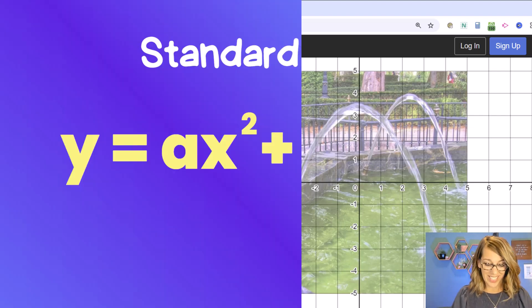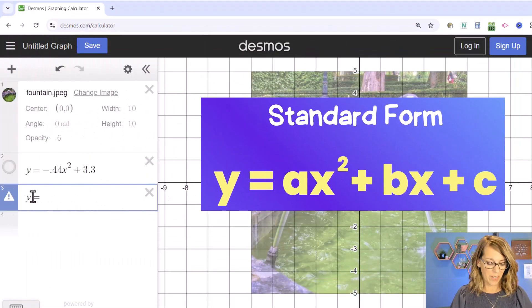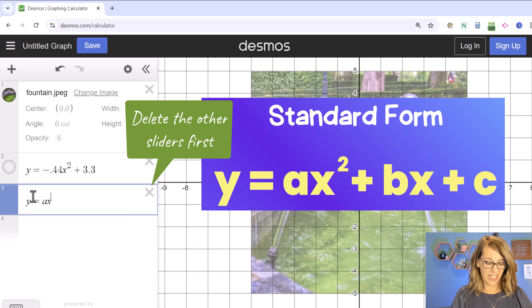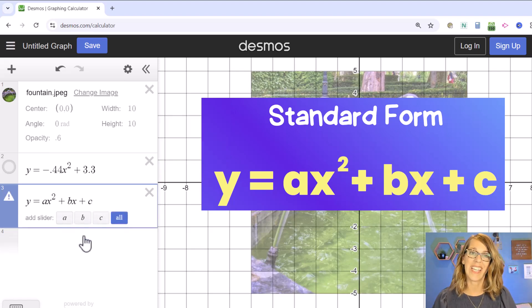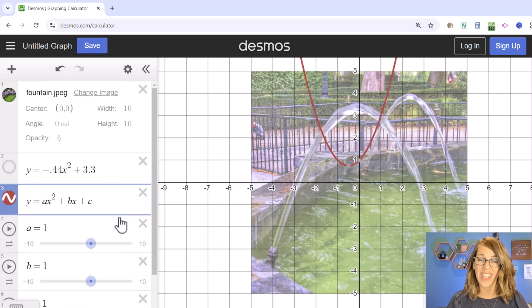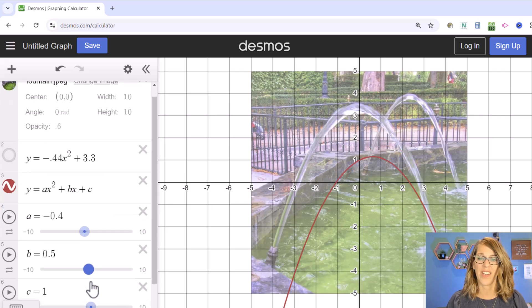You might instead need to do this in standard form. So I'm going to type in the standard form y equals ax squared plus bx plus c. Now I've got sliders for all three of these. And I can again start to change this to get the right shape.